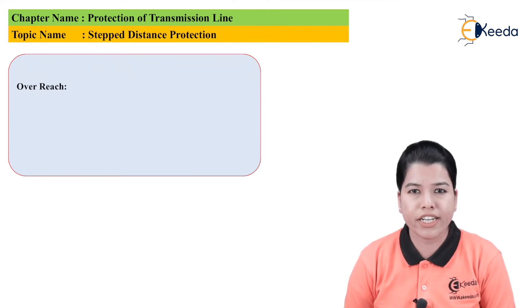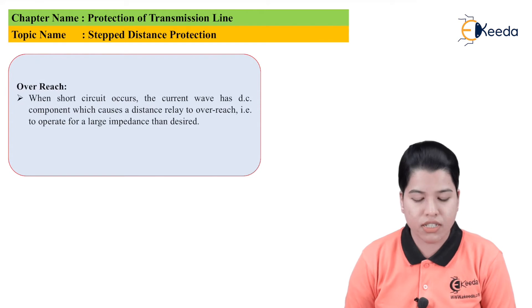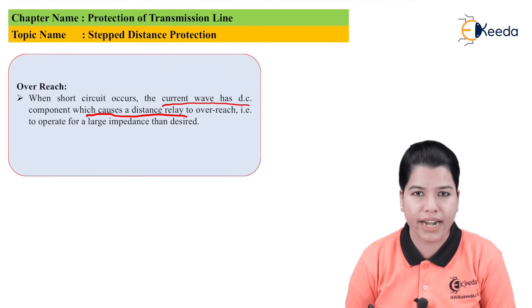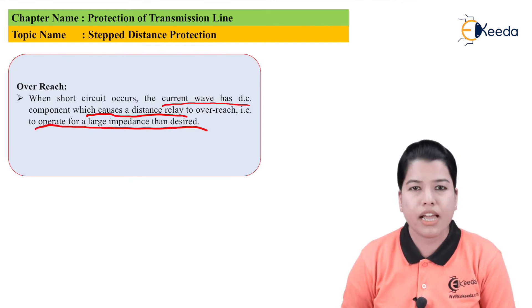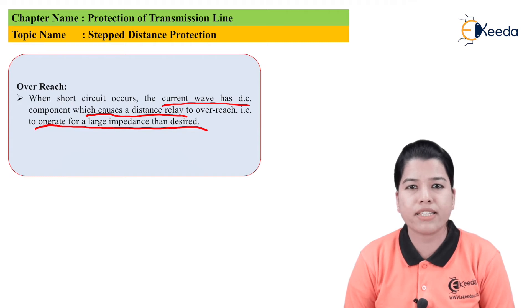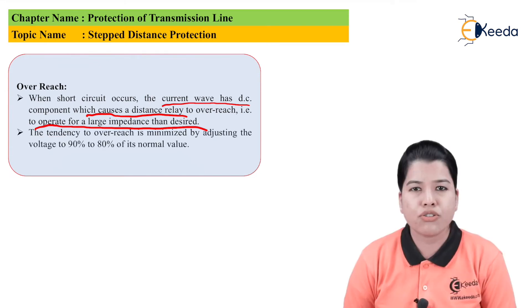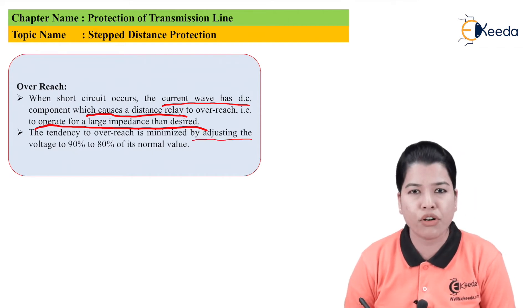Now let us consider the condition of overreach. When a short circuit occurs, the current wave will have a certain DC component, which will cause the distance relay to overreach, that is, to operate for a larger impedance than desired. Due to the presence of this DC component, the total impedance measured by the relay increases, resulting in the overreach condition. The tendency to overreach can be minimized if we adjust the voltage to 80% to 90% of its normal value.